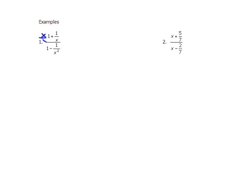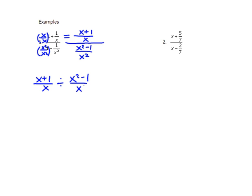Let's look at the next example — one bite at a time. In the numerator, the common denominator is x, so I multiply the whole number by x over x and get x plus one over x. In the denominator, the common denominator is x-squared, so I multiply by x-squared over x-squared and get x-squared minus one over x-squared. Now I rewrite it: the numerator divided by x-squared minus one over x-squared, then keep-change-flip.